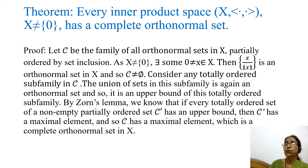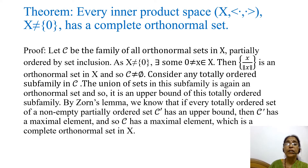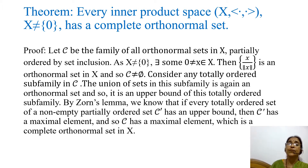As X is a non-zero space, there exists a non-zero vector in X, say x. Since x ≠ 0, the norm of x is non-zero, and so we can define a vector x / ||x||. The singleton set {x / ||x||} is an orthonormal set in X, because its norm is 1 and there is no other vector in this set. So this family of orthonormal sets C is non-empty. Consider any totally ordered sub-family in C. Totally ordered means any two members of that sub-family are related — one must be contained in the other. The union of sets in this sub-family is again an orthonormal set, and so it is an upper bound of this totally ordered sub-family.